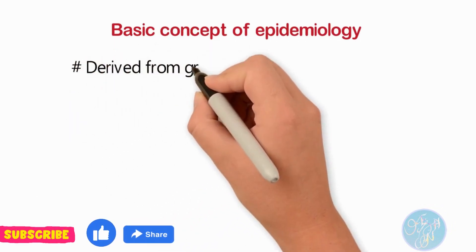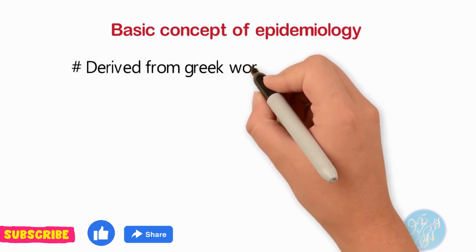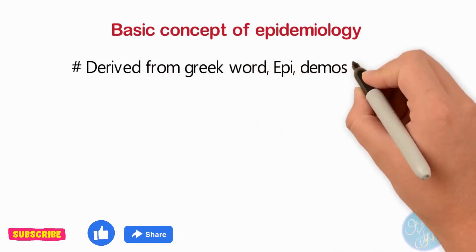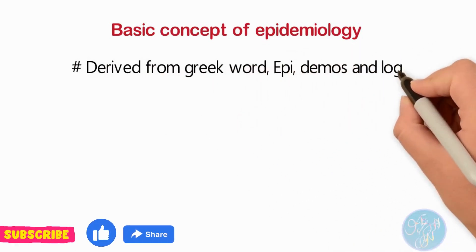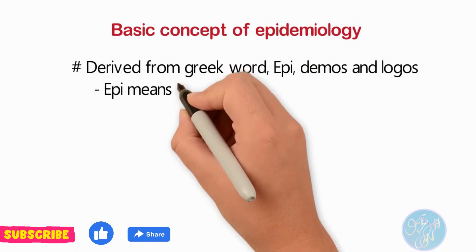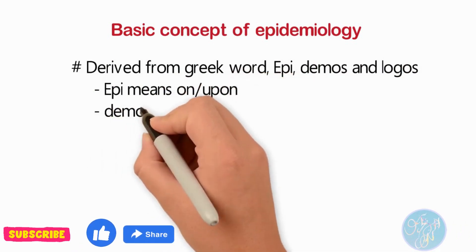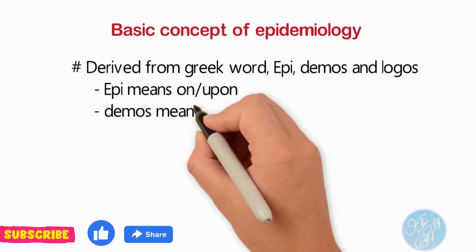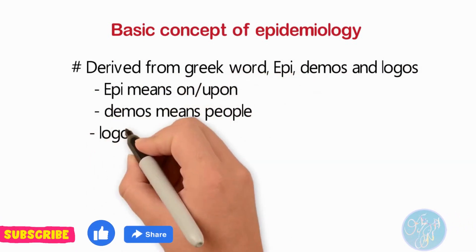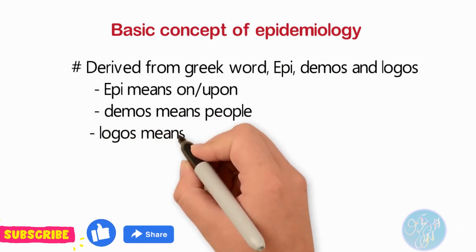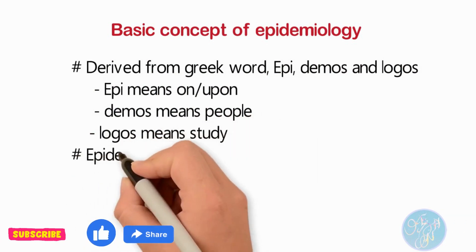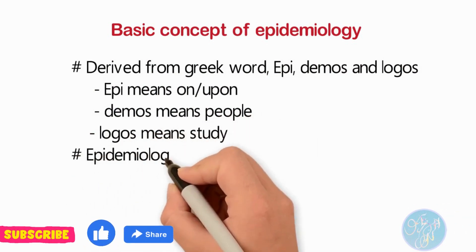Epidemiology is derived from three Greek words: epi, demos, and logos. Epi means 'on or upon,' demos means 'people,' and logos means 'study.' From the meaning of the word, we are already clear that it is a study of people. Now the question arises: what does it study about people?